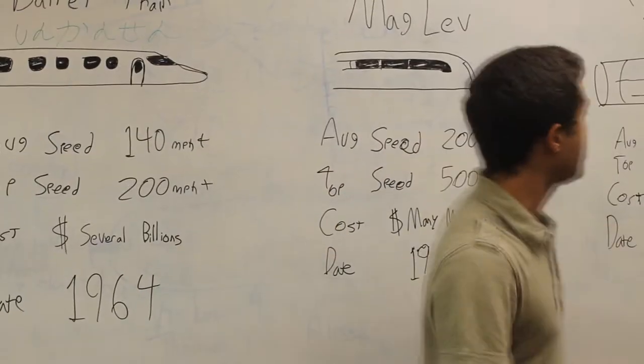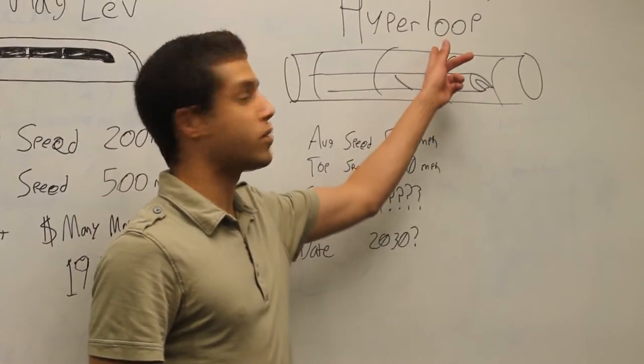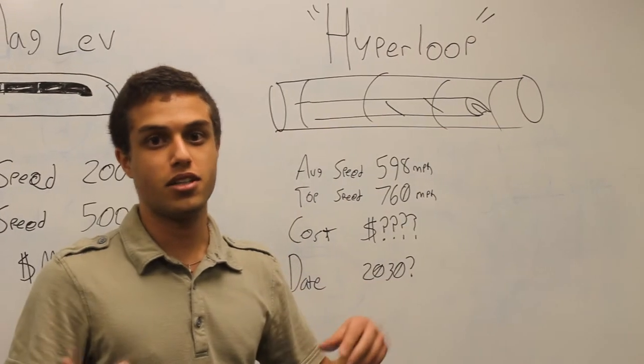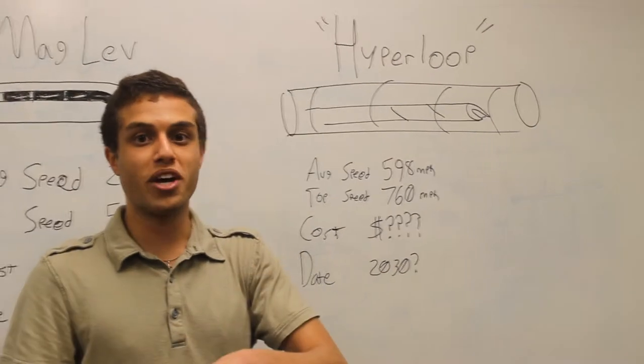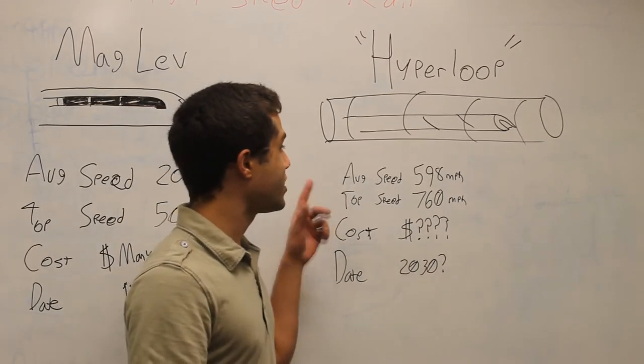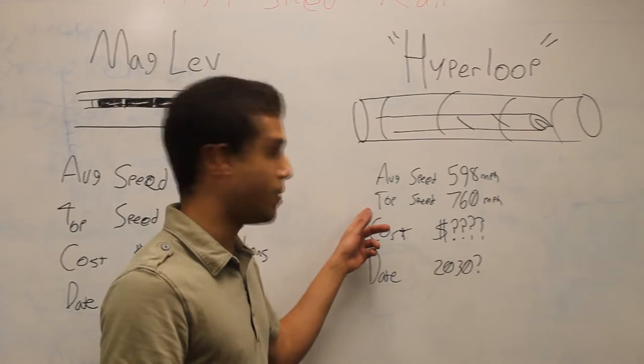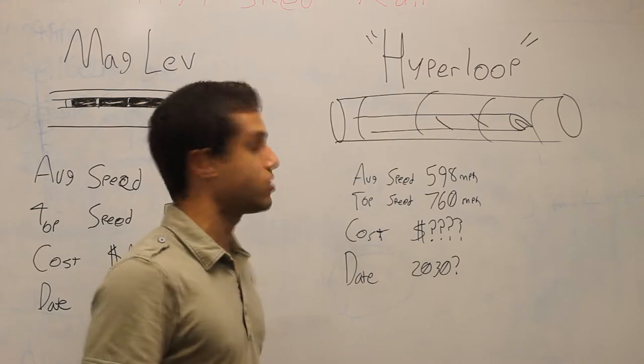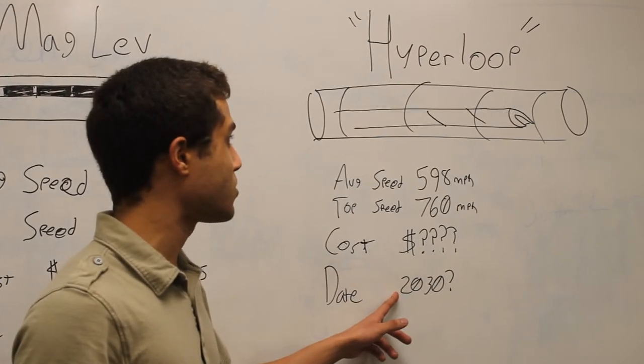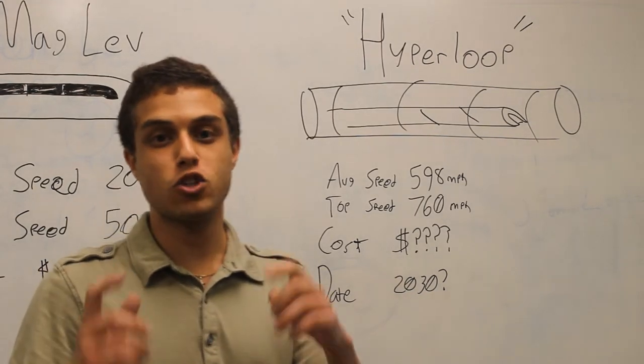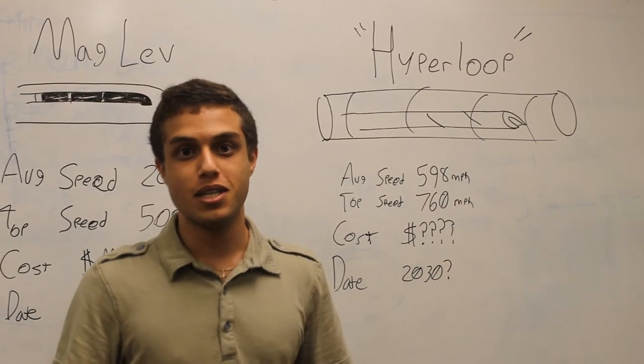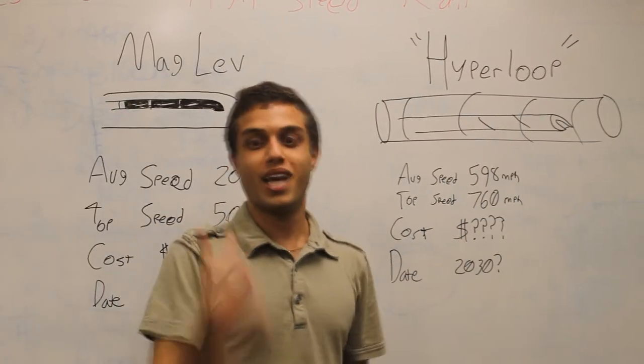The third type of high speed rail system is the famous Hyperloop, proposed by Mr. Elon Musk. This train, or well it's not really a train, it's actually a train in a tube, which we will call rail because it is high speed. Average speed should go about 598 miles an hour, and top speed is 760 miles an hour. That's ridiculously fast, even faster than actual planes. But do we know the cost? We're not quite sure. And the date when it's made is not quite yet. We don't actually have a certain date of when the Hyperloop will actually work. It's still in the process of development, pretty much in the cloud of thinking right now.